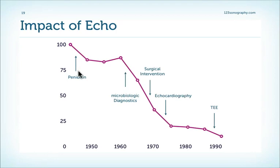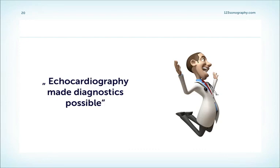This graph shows the mortality of endocarditis across various decades. You can see that endocarditis was practically a lethal disease before the advent of penicillin, then mortality dropped. Another drop followed with the advent of microbial diagnostics and surgical intervention. Then echocardiography — both transthoracic and transesophageal — greatly impacted the prognosis. For the first time it was possible to directly visualize the infection not post-mortem but pre-mortem, and to see not only indirect signs via auscultation but to really visualize the infection itself.